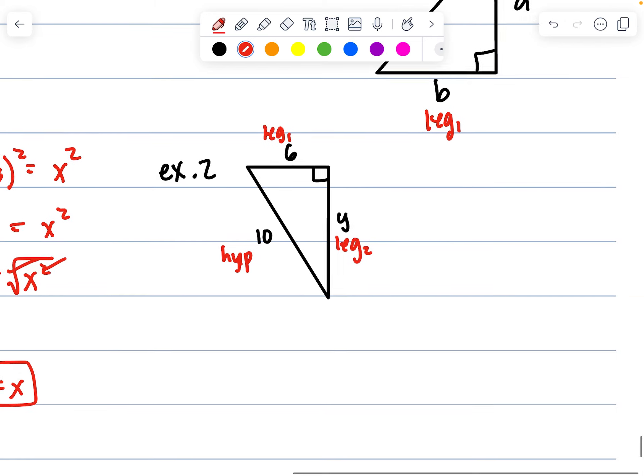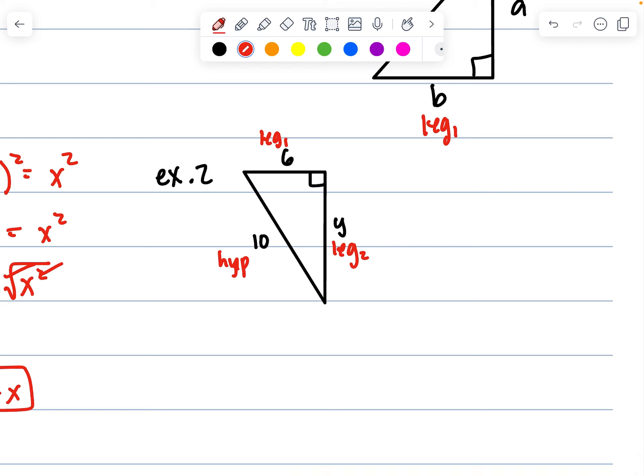Solving for using the Pythagorean theorem, we would state that six squared, because that's leg one, plus y squared, because that's leg two, is equal to 10 squared, because that's the hypotenuse. Six squared is 36 plus y squared is equal to 100. Subtract 36 from both sides, we get y squared is equal to 64. Square root both sides, we get y is equal to 8.